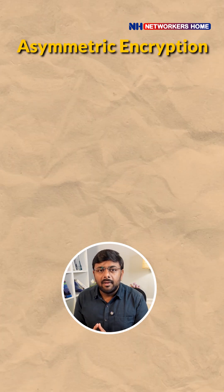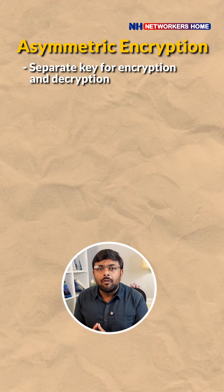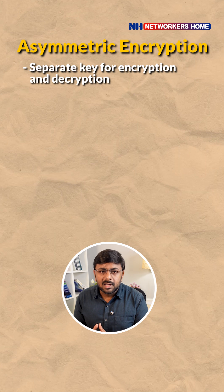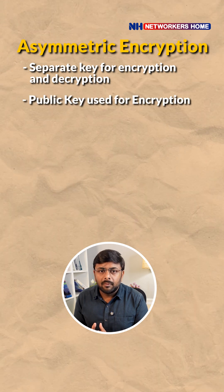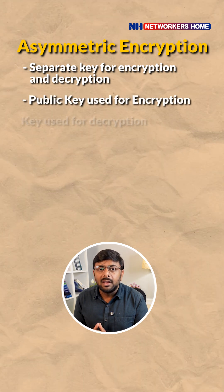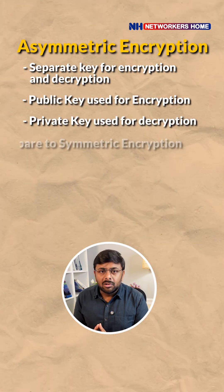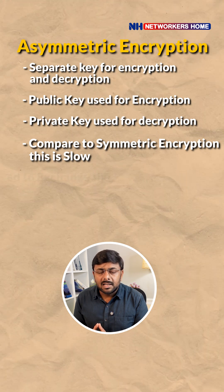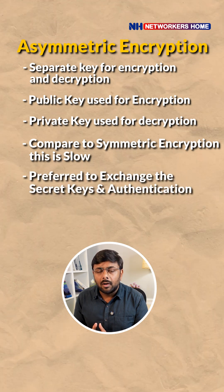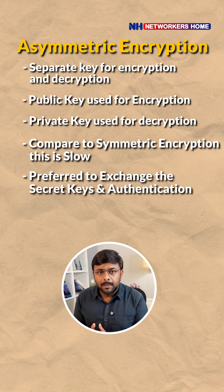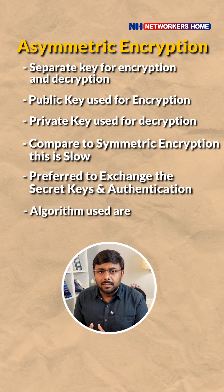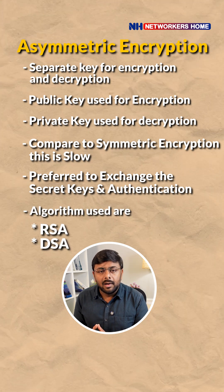In asymmetric encryption, we have a separate key for encryption and a separate key for decryption. The public key is used for encryption whereas the private key is used for decryption. Compared to symmetric encryption, asymmetric encryption is slow. It is mainly preferred for exchanging the secret keys and authentication. Algorithms that come under asymmetric encryption are RSA and DSA.